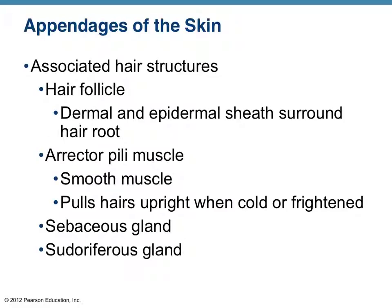A couple of other structures to be familiar with: the hair follicle is essentially the shaft or depression that houses the hair root. The erector pili muscle is pretty important — this is what actually pulls hairs upright when you're cold or frightened. When it pulls the hair upright, it produces a little bump on the skin, piling up the skin. That is goosebumps — and if you're from Minnesota, that's goosebumps, not duck bumps.